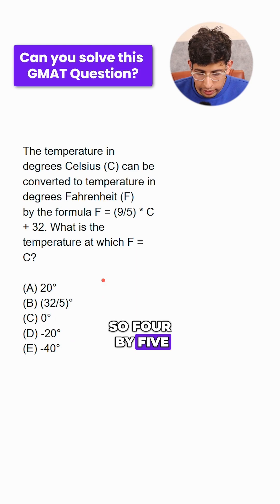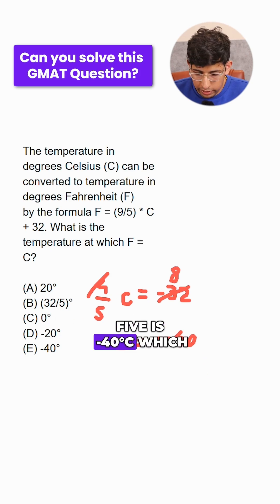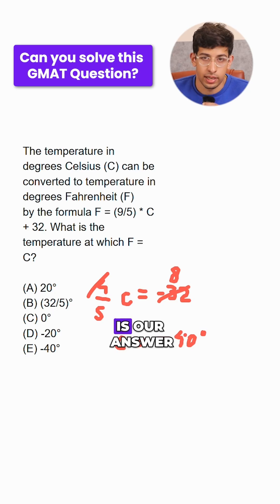So 4 by 5 C equals minus 32. Hence C equals, 4 8s are 32, and 8 times minus 5 is minus 40 degrees Celsius, which is our answer.